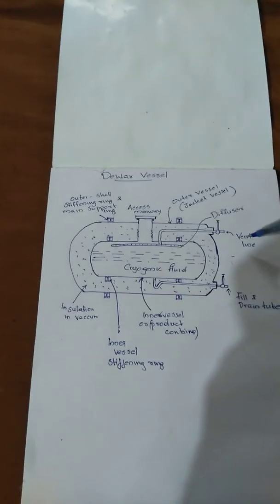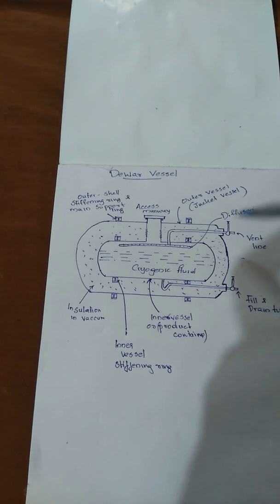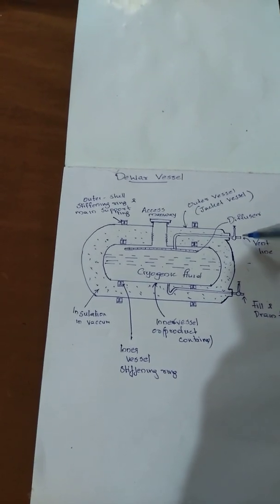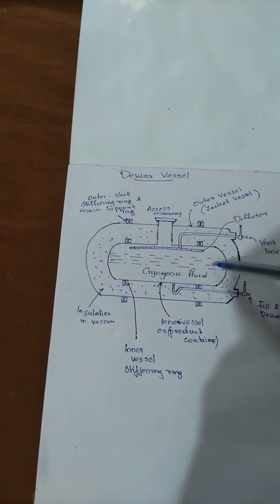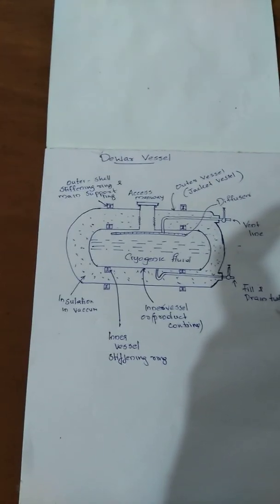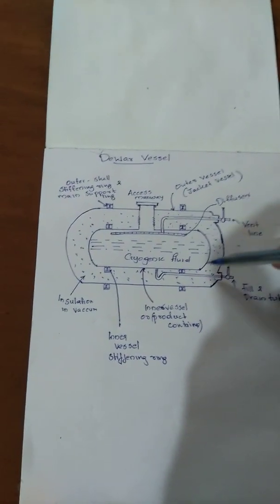It consists of a vent line for the escape of water vapors produced inside the inner vessel and contains a fill and drain tube for filling and draining the fluid into the container.